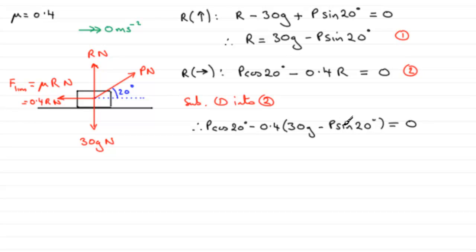Now what I'd want to do is expand this bracket out. So we've got P cosine 20 degrees minus, and if you do 0.4 times 30, that's going to be 12. So that's 12g. And then you've got minus 0.4 times minus P sine 20. So that's going to be positive value, 0.4 P sine 20 degrees. And that equals 0.